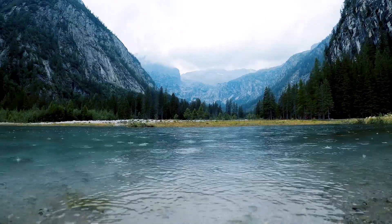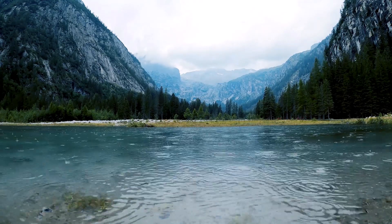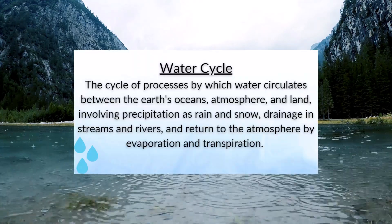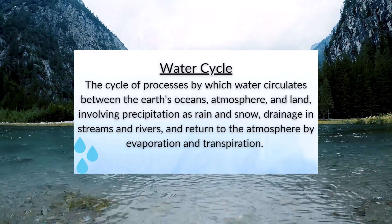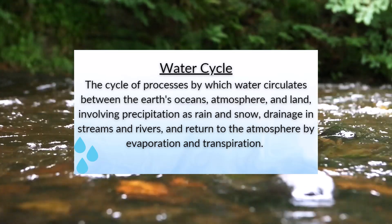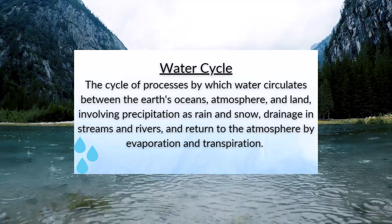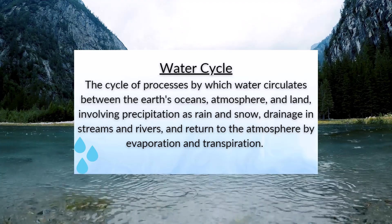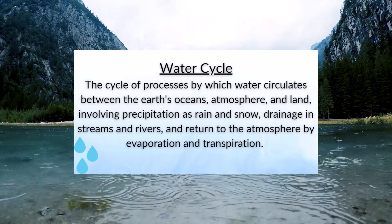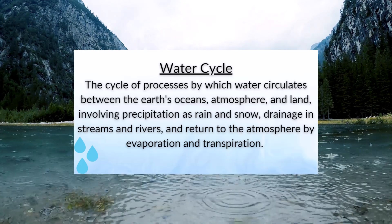In order to sustain natural life, water follows a very complicated path or cycle known as the hydrologic cycle, also known as the water cycle. This water cycle is the process by which water circulates between the Earth's oceans, atmosphere, and land, involving precipitation as rain and snow, drainage in streams and rivers, and return to the atmosphere by evaporation and transpiration.